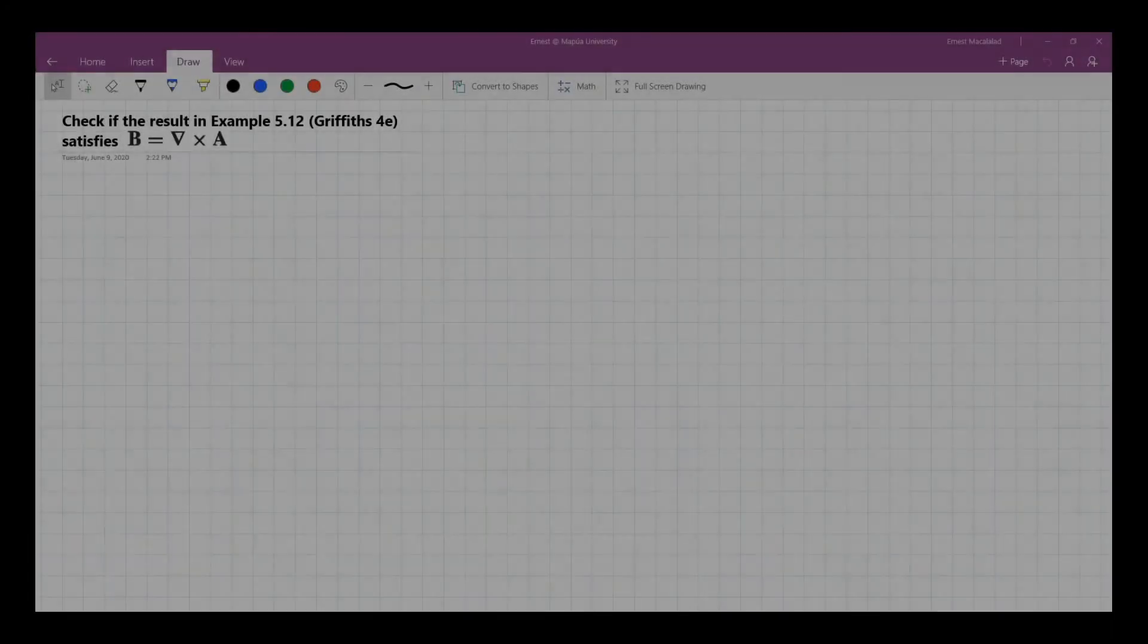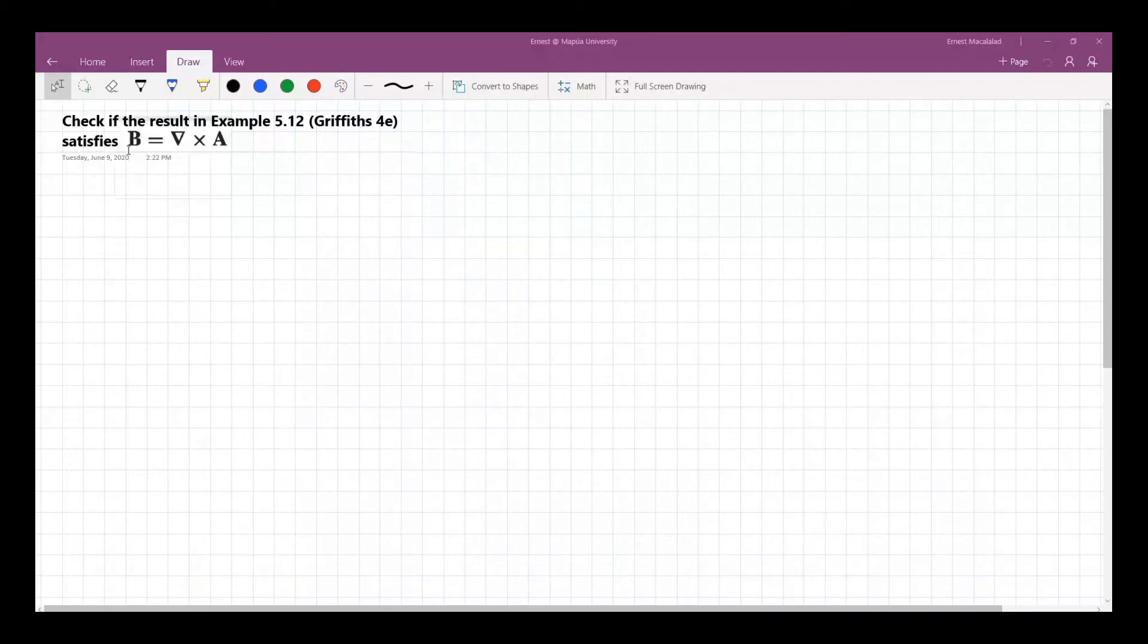Okay, so example 5.12: find the vector potential of an infinite solenoid with n turns per unit length, radius R, and current I.